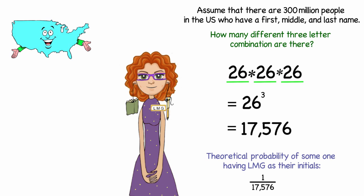Well, that would be approximately the 300 million times the probability of my letters. And when I multiply those together, I get 17,169 people.